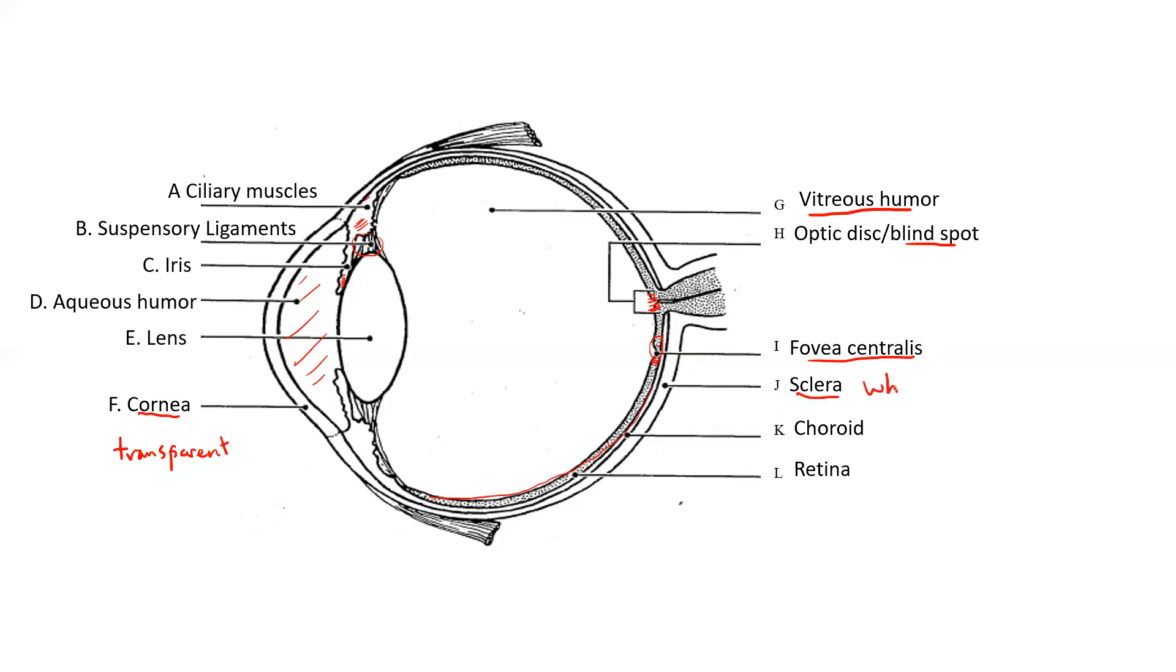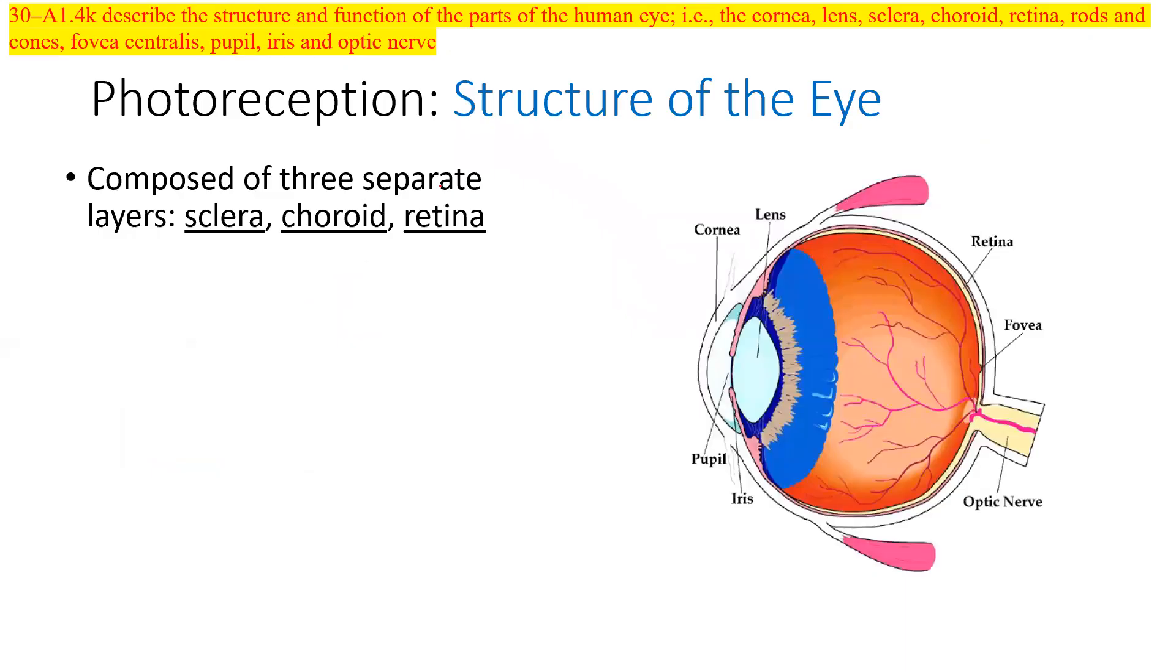The retina is this layer of photoreceptors here. The sclera are the whites of your eye. They're the outer part, but notice that the sclera becomes transparent when it becomes the cornea, the front part. The choroid is melanin. It's very dark. And that absorbs pigment.